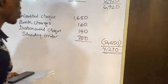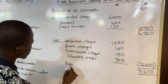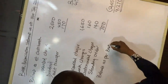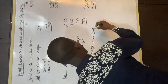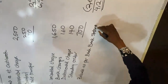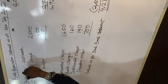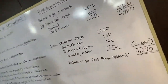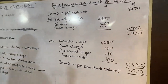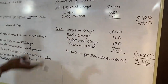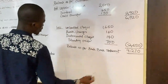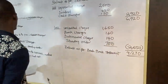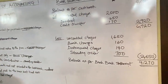So 4,270 is your balance as per bank statement. This is just how it works — you work back from your cash book to your balance as per bank statement. If you want to do the second method, starting from the bank statement balance, you just do the opposite: start with balance as per bank statement, then add back all the deductions and less all the additions to arrive at the balance as per cash book. Either of the two methods is fine.